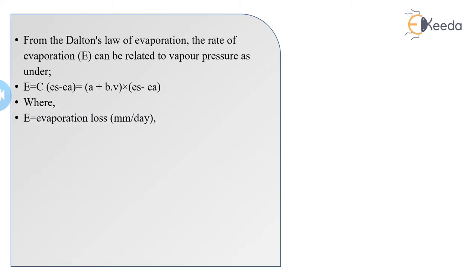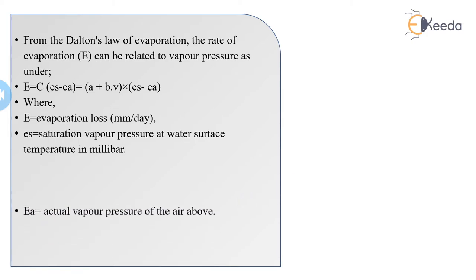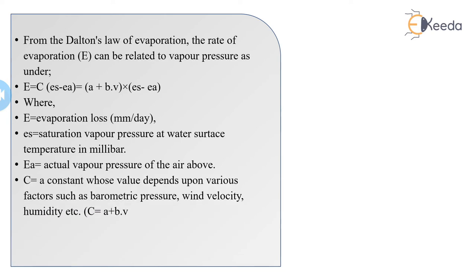Where E is the saturation vapor pressure at the water surface, Ea is the actual vapor pressure, C is constant, and A, B are also constants.